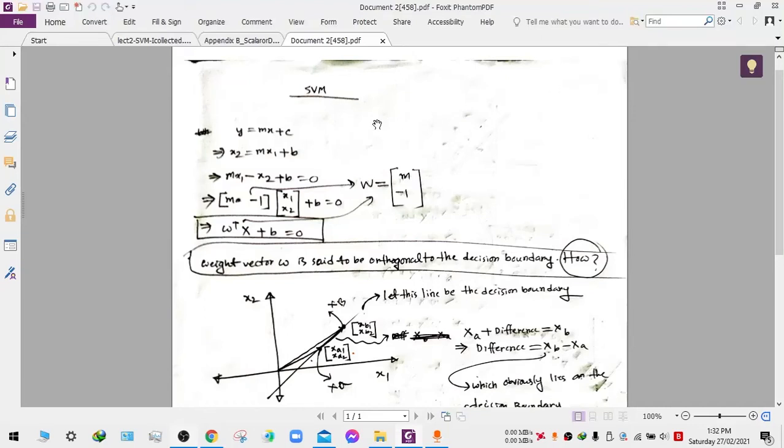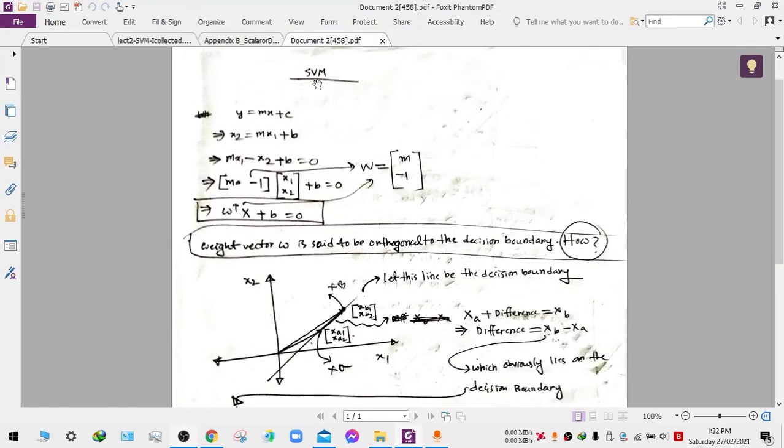Hello everyone, today I will show you why the weight vector of the decision boundary is orthogonal to the boundary itself. So let's begin. In support vector machine, normally we represent a line by this equation: y equals mx plus c, where m is the slope of the line and c is the intercept along the y-axis.